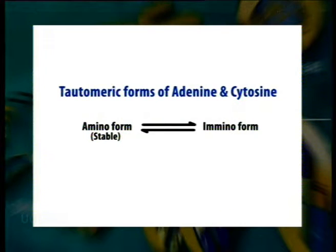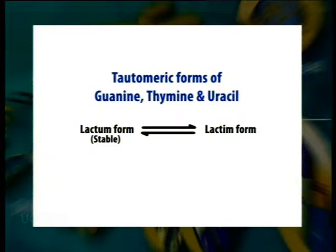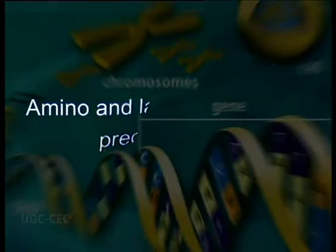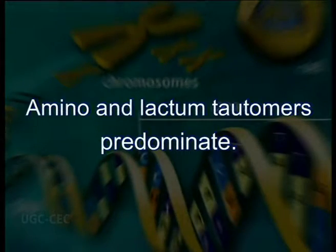Each commonly occurring pyrimidine and purine can be drawn in 2 tautomeric forms. Adenine and cytosine can exist as either amino or imino forms, and guanine, thymine, and uracil can exist as either lactam or lactim forms. The 2 forms of each base exist in equilibrium, but under conditions found inside most cells, the amino and lactam tautomers are more stable and therefore predominate.